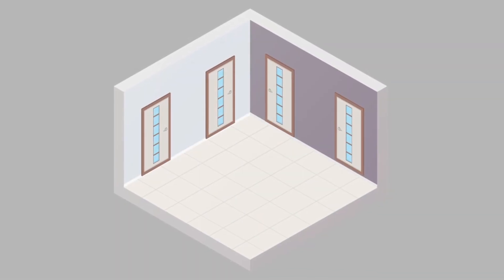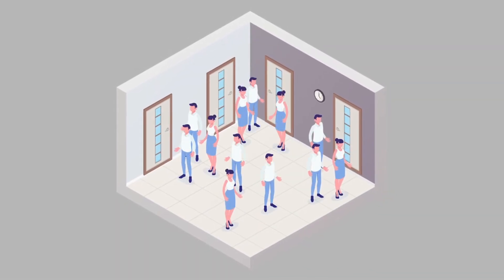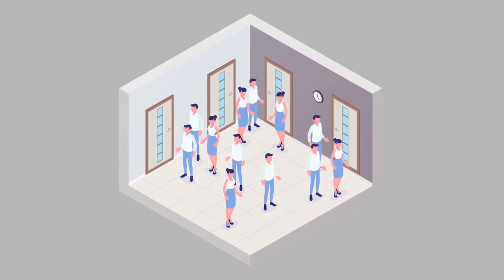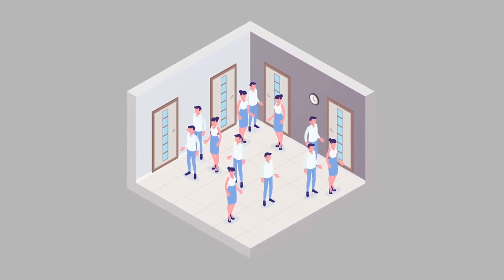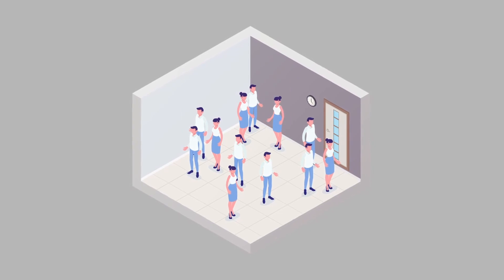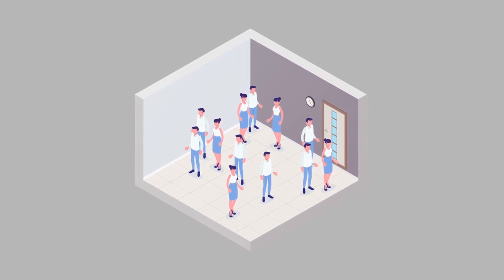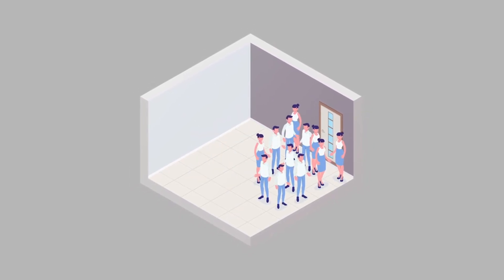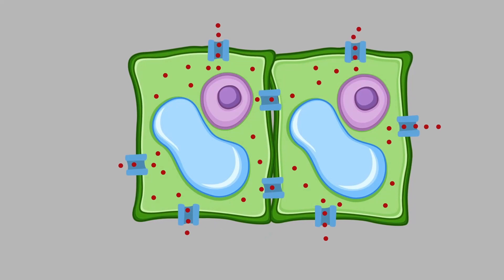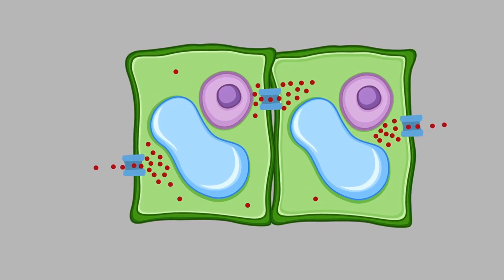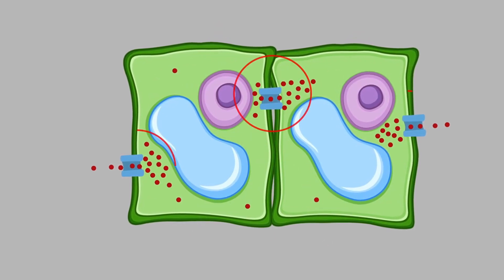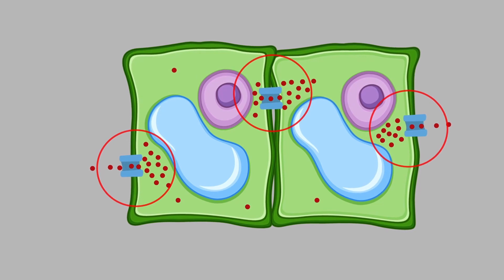we saw that the number of small structures called plasmodesmata in this plant was greatly reduced. Consider a room with many doors — people inside that room can move out easily. However, if there is only one single door, movement would be a problem. Now imagine a cell: if the number of cell pores gets reduced, there will be a problem in the movement of substances.